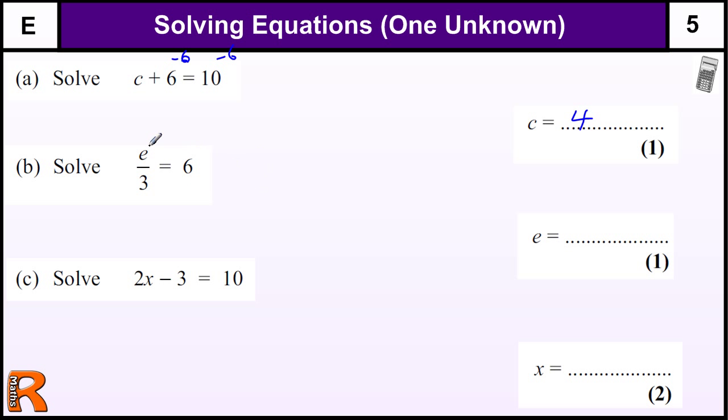But if you think about it and put your number in there, 2 divided by 3 is not equal to 6, so that's not right. What we've got to do here is the opposite of divide by 3, which is times by 3. So if we times this by 3, that gets rid of that divide by 3, and 6 times 3 is 18.